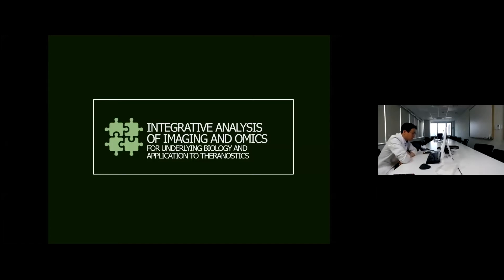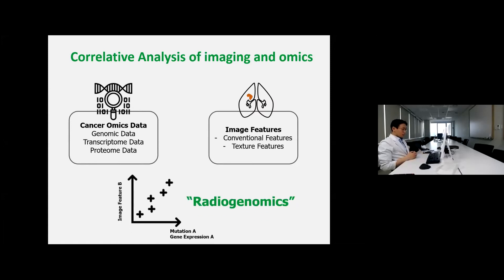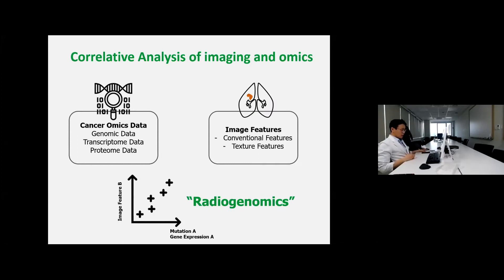I will introduce some real examples and real strategies for integrative analysis of imaging and omics. Correlative analysis of imaging and omics has been investigated for 10 or 15 years. Because we could collect cancer omics data around 10 years ago, we could design some correlative analysis for imaging features and cancer omics data. This is generally called radiogenomics. Many studies in radiology and nuclear medicine perform this radiogenomic analysis, which is very simple: we get imaging information from imaging data, and also get mutation profiles or gene expression profiles, then find the correlation between imaging features and mutation or gene expression profiles.